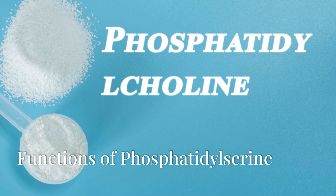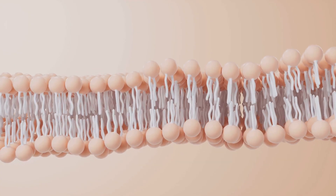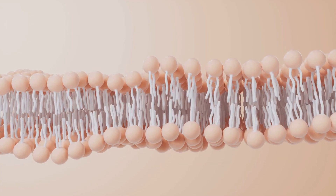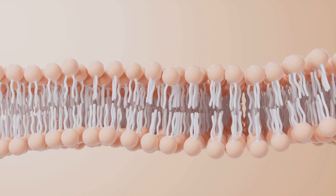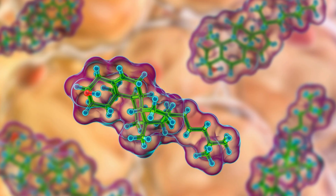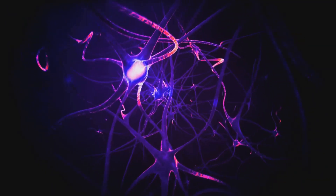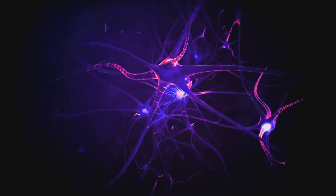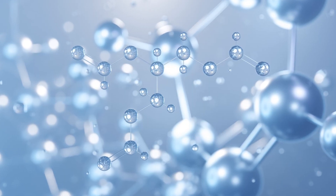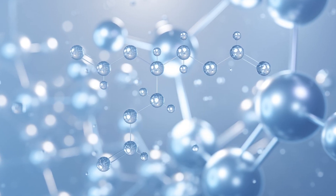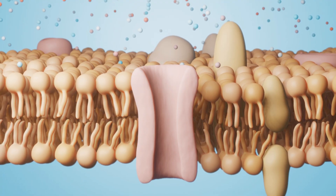In the human body, phosphatidylserine supports various biological functions. It is most renowned for its role in brain health, where it aids in cognitive functions, memory, and learning. Beyond the brain, PS contributes to maintaining normal cellular processes and supports overall physiological balance.